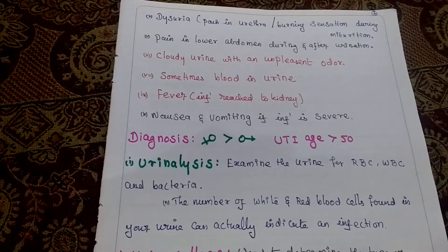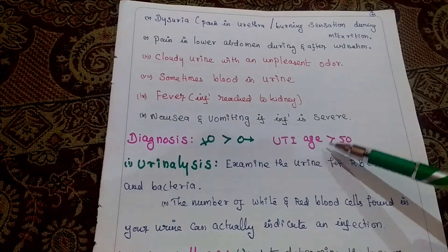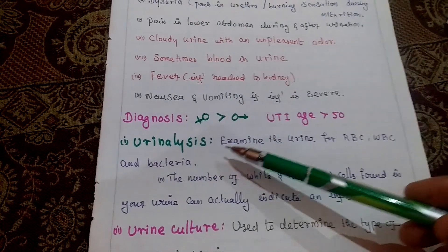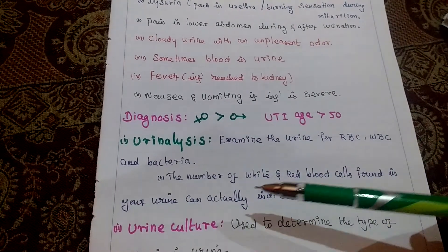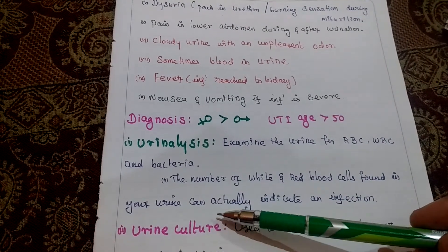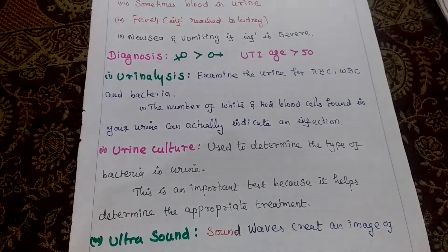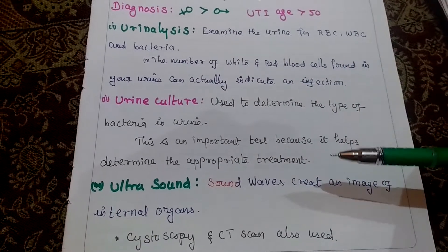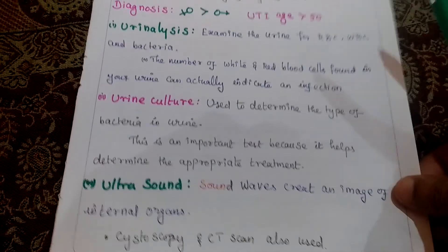Compared to males, females are more commonly affected, particularly those above age 50. For diagnosis, urine analysis is performed first, examining RBC, WBC, and bacteria count — the number of WBC and RBC cells found in the urine can indicate an infection. Urine culture is very important, as treatment is based on its results. Ultrasound uses sound waves to create images of internal organs. Cystoscopy and CT scan are also used.